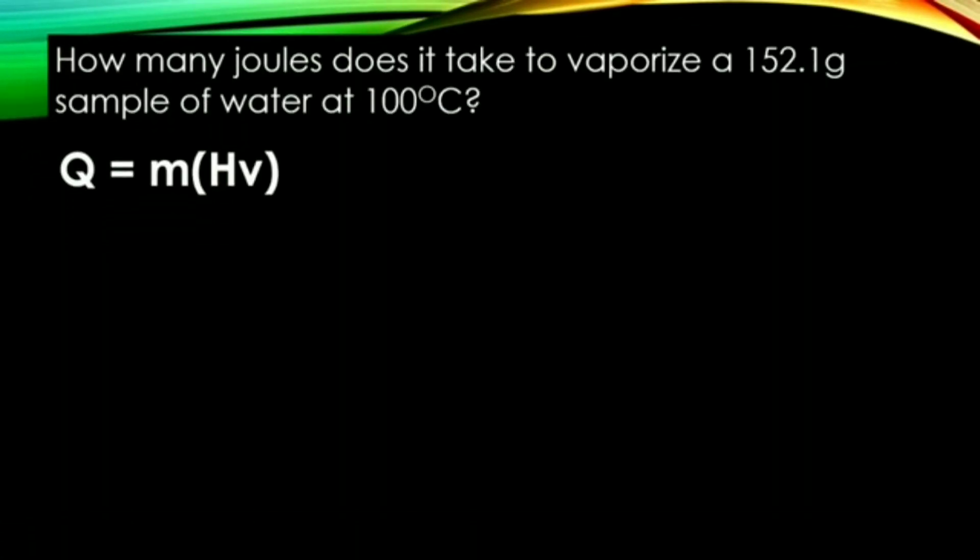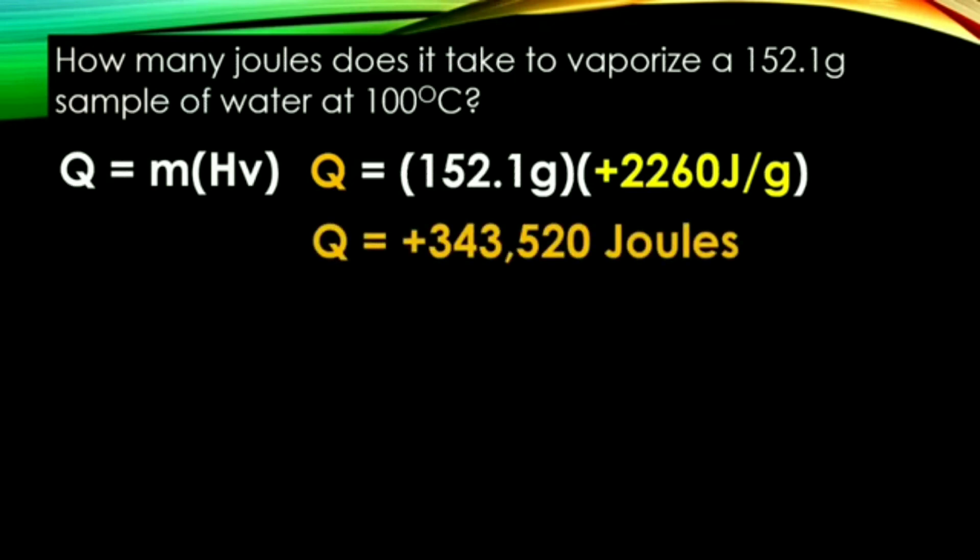Let's try this question. How many joules does it take to vaporize 152.1 gram sample of water at 100 degrees Celsius? So here, the keywords are vaporize and 100 degrees Celsius. Now that we have our equation, we'll substitute. Remember, the value 2,260 comes from reference table B. Once we put this in our calculator, you can determine that 343,520 joules must be absorbed to change this amount of water into steam.